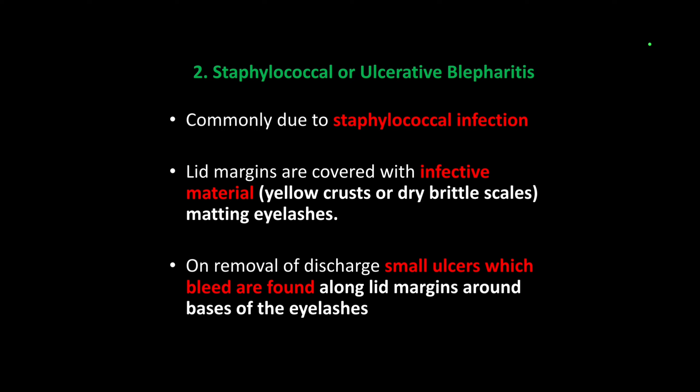Now we come to ulcerative blepharitis. This is caused by staphylococcal infection, and the lid margin is covered with infective material — yellow crusts. When we remove it, there is bleeding and ulceration. So this is the dividing point between squamous blepharitis and ulcerative blepharitis.